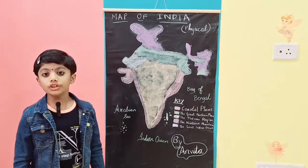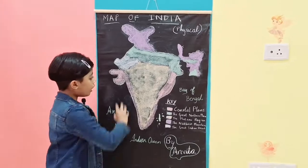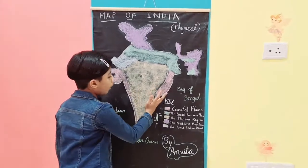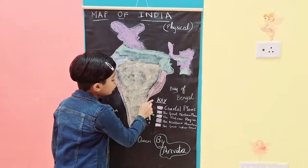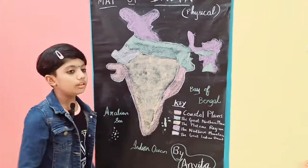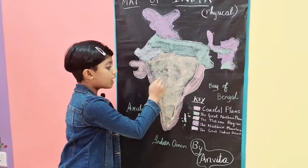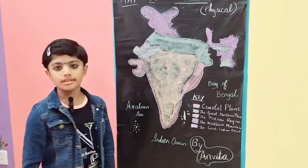I would like to tell y'all one more thing. After y'all finish drawing the map, we should always write the key so that the third person can understand what each color represents.